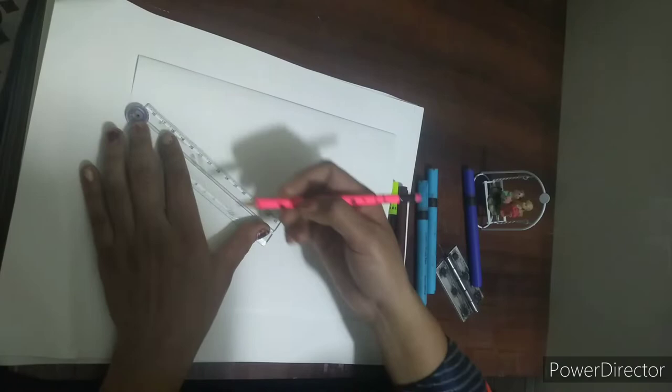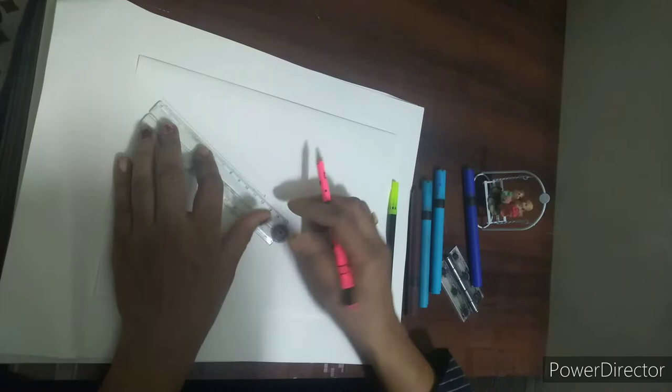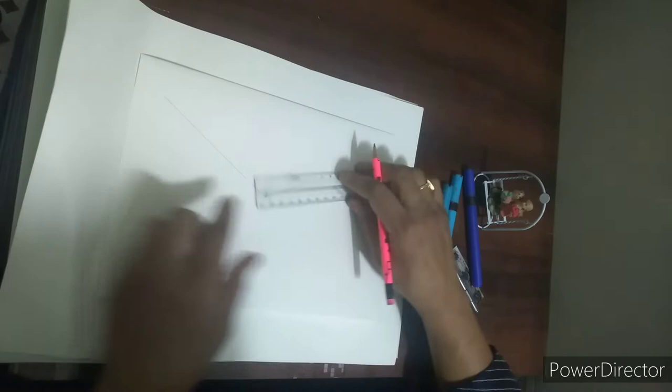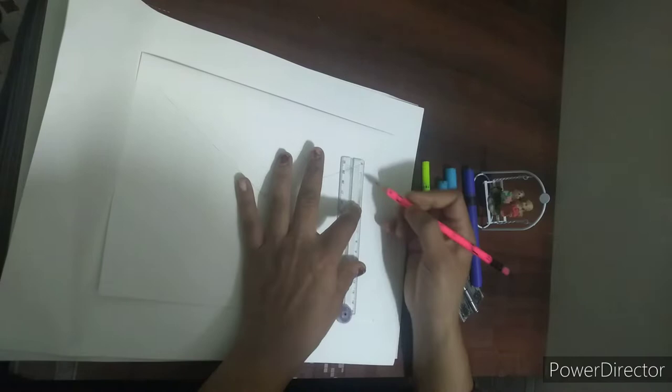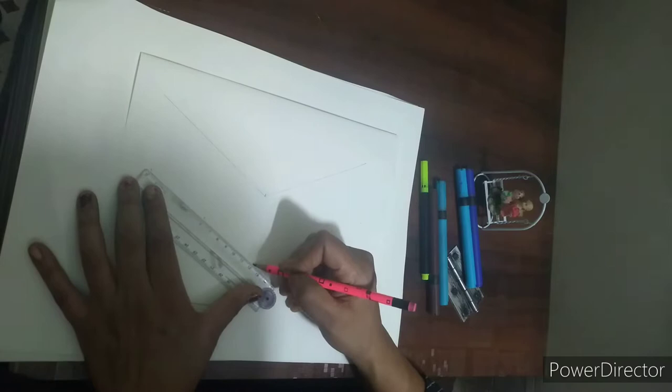12 centimeter slant line, 0 to 12, okay. Next I will draw a slant line from here, 0 to 12. Now I will draw some points here, 6 centimeter. This is a very technical drawing, please remember.